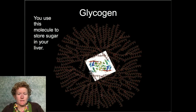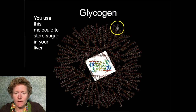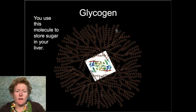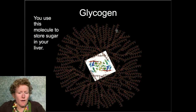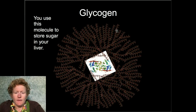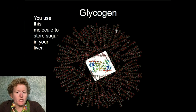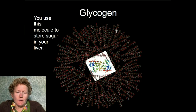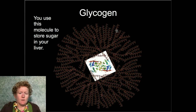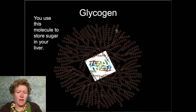This is glycogen. Each one of these little circles is a glucose. Glycogen is how animals store their glucose — they stick a bunch of glucoses together in branched chains for long-term storage. Notice both glycogen and starch have lots of branching chains.